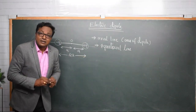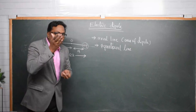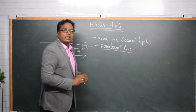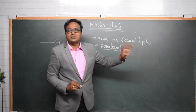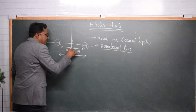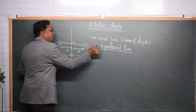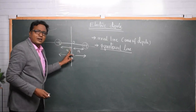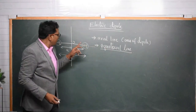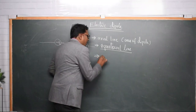The next term is the equatorial line, also called the normal bisector. 'Normal' means it is perpendicular. The definition: a line perpendicular to the axis of the dipole and passing through the midpoint of the dipole is called the equatorial line. So we have two simple definitions — axial line and equatorial line.